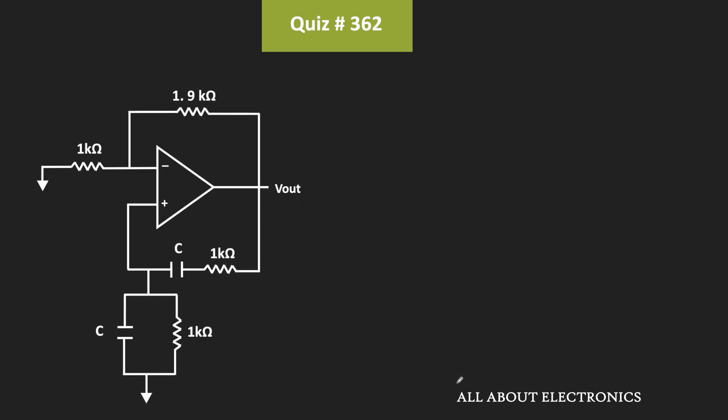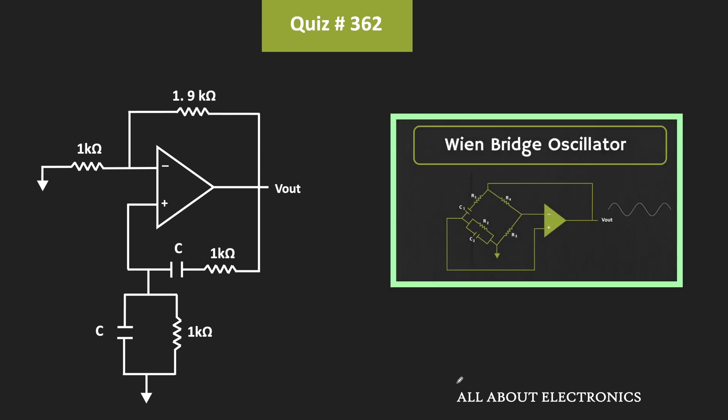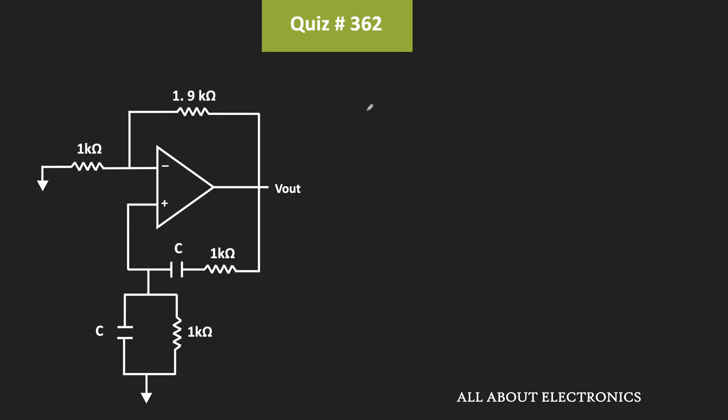If you look at this circuit, it seems like a Weinbridge oscillator. If you have followed my video on the Weinbridge oscillator, we have seen that the frequency of oscillation f₀ can be given as 1 divided by 2π times the square root of R₁ times R₂ times C₁ times C₂.